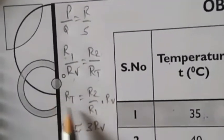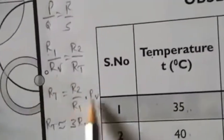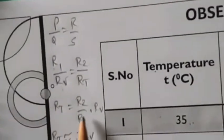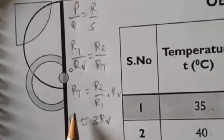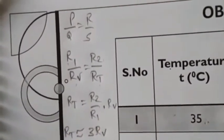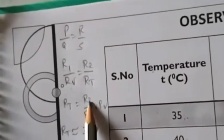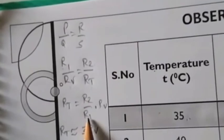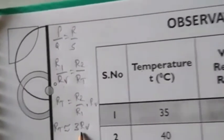This relation can be used only during the balancing condition of the bridge, because all observations are recorded when the zero-centered galvanometer shows zero deflection. Rt can now be obtained as 3Rv, because R2 is found to be three times R1 from the multimeter measurement, hence Rt is close to 3Rv.